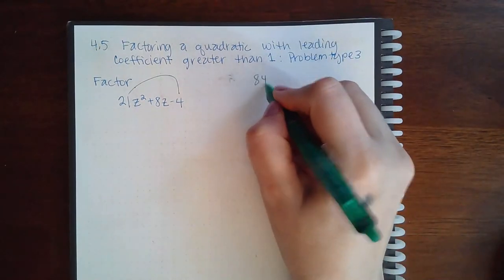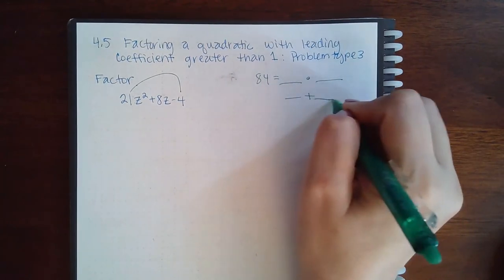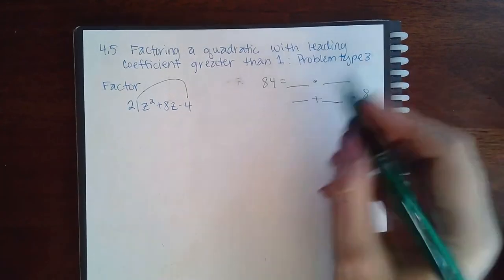So I need to multiply to get 84, but then add to get the middle guy, which is 8. So let's see that.